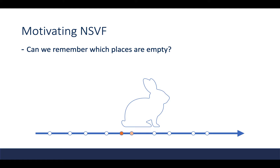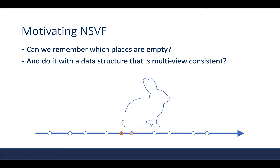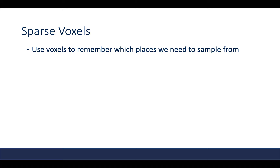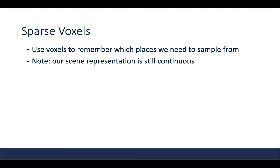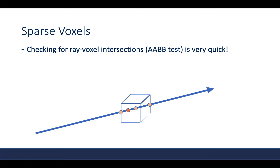So can we remember which places are empty, and can we do it with a data structure that is multi-view consistent? According to the authors, the answer is yes. We can use voxels to remember where we need to sample from, and we can still do this with a scene representation that is continuous — we'll still use an MLP to predict our volume density and colors. This way, we can very quickly check where to sample using ray-voxel intersections.